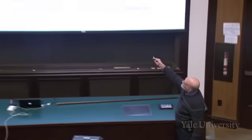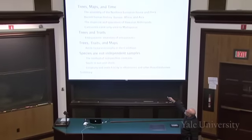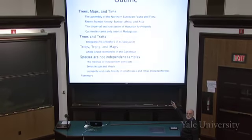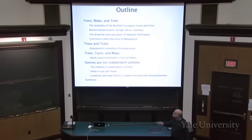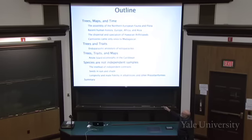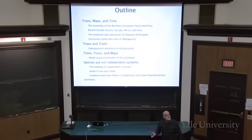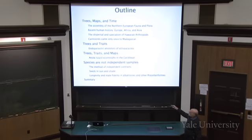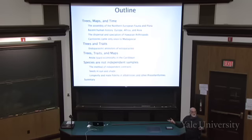The outline is: first, a bit about looking into time using phylogenetic trees and looking into geographic history. Then we'll look at how we can map traits onto trees and draw some surprising conclusions. Then we will put trees together with traits and put them on maps to understand evolutionary ecology. We'll end with a take-home message: species are not independent samples, and because they're not independent samples, we need special methods for assessing how frequently things evolve in the Tree of Life.